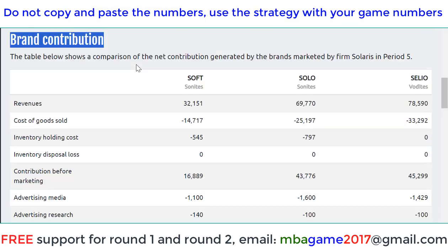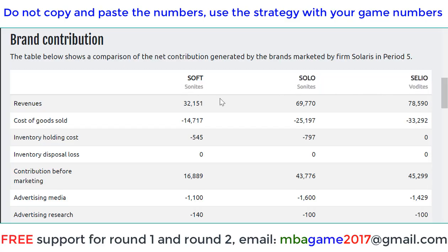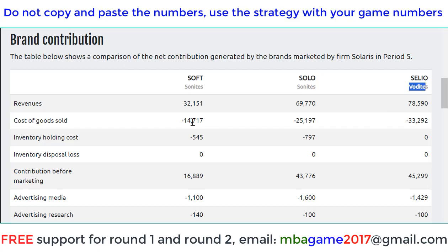Looking at the brand contribution section — this is a very important part. You can see three products here across two segments: Sold Night and Vodai. The tip here is to try to launch the Vodai as soon as you can and maintain the two Sold products. You can also develop Sold Night if you want, but if you launch Vodai early, you can get better sales.